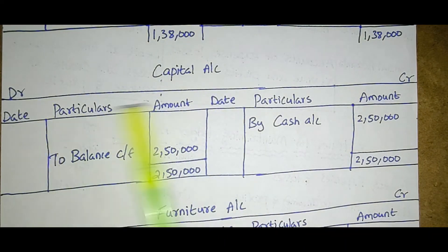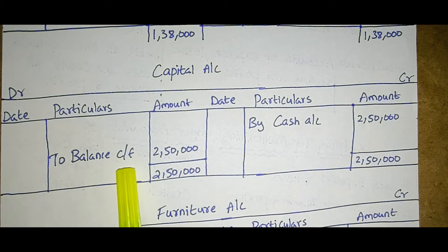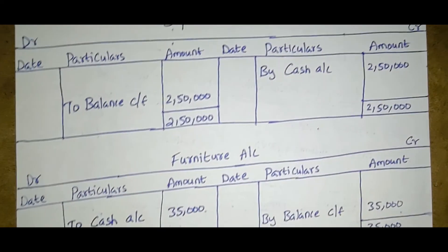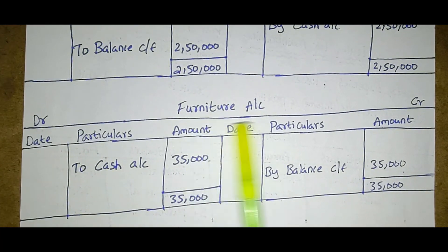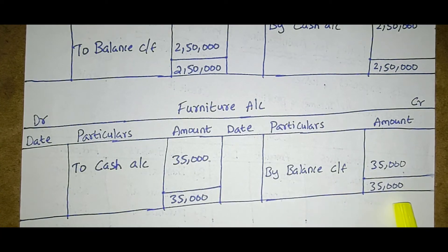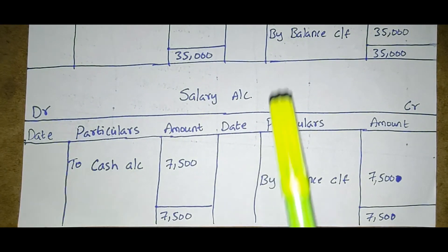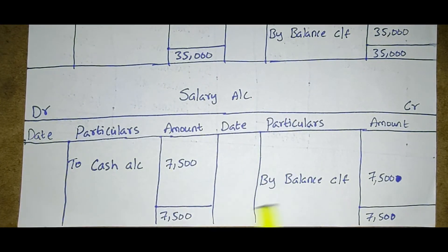Capital account: to balance carried forward two lakhs fifty thousand; by cash two lakhs fifty thousand — both sides equal. Furniture account: to cash account thirty-five thousand; by balance thirty-five thousand — equal. Salary account: to cash seven thousand five hundred; by balance carried forward seven thousand five hundred — equal.